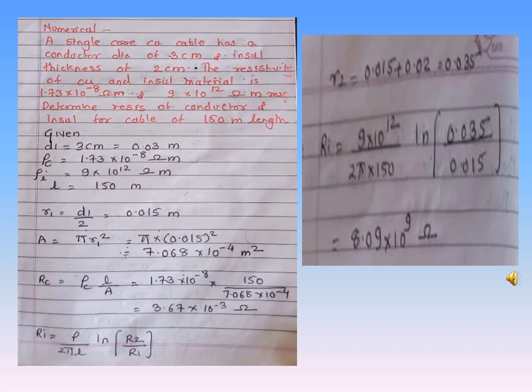The conductor resistance is found using R = rho × L / A = (1.73 × 10⁻⁸ × 150) / (π × R1²), where R1 = D1/2 = 0.015 m. For the insulation resistance, we use Ri = (rho / (2πL)) × ln(R2/R1), taking resistivity as 9 × 10¹².